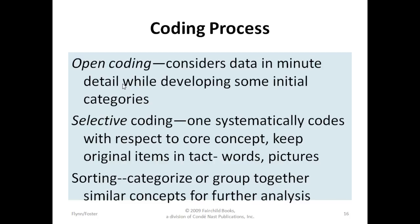Looking at the coding process, there are three types of coding. Coding is a process for both categorizing data and for describing the implications and details of these categories. You're going to start with open coding, and it considers data in minute detail while developing some initial categories. You would just do open coding at the beginning to look at very specific details. Then once you get moving, you're going to move to selective and sorting. Selective coding is when you systematically code with respect to the core concept and you keep the original items intact of words or pictures. And then sorting looks at categorizing or grouping together similar concepts for future analysis. That's where if you had things that kept coming up, you would categorize all those together.